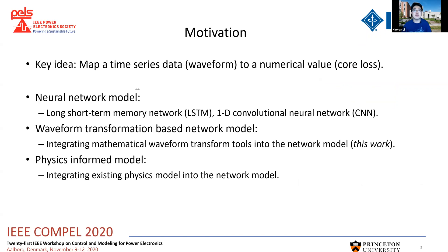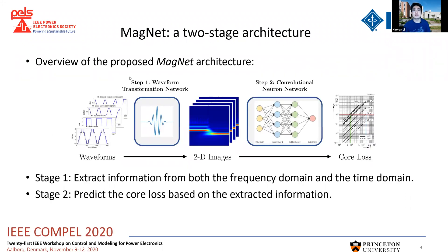The key idea here is to map a time series data, which is the excitation waveform, to a numerical value, namely the core loss. There are many potential feasible approaches we are currently exploring. Firstly, pure neural network models such as the long-short-term memory network or one-dimensional convolutional neural network, both of which are very good at dealing with time series input. Secondly, which is actually this work, is to integrate some mathematical waveform transformation tools into the network. And thirdly, there could also be some physics-informed models, where existing physical models are integrated into the network.